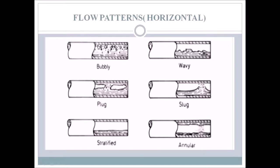The flow configurations differ from each other in interface distribution, resulting in different flow patterns. So whenever there is a combination of gas and liquid flow inside a pipe, we can see things like bubbly flow, wavy flow, plug, slug, stratified, or annular. The essence of this project is to be able to classify every flow into either wavy, annular, or stratified, given the superficial velocity of the gas or the liquid phase.